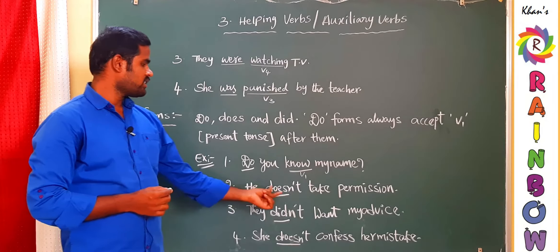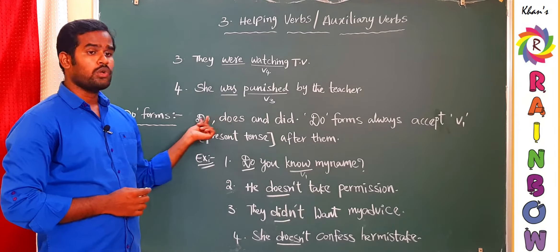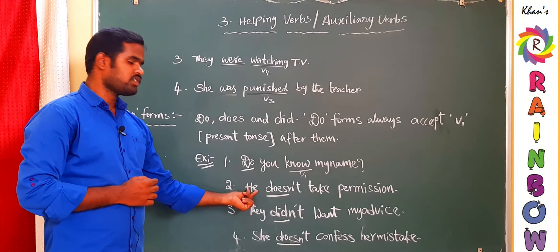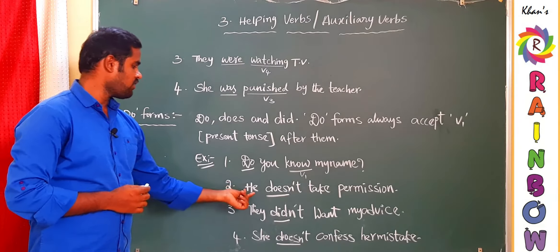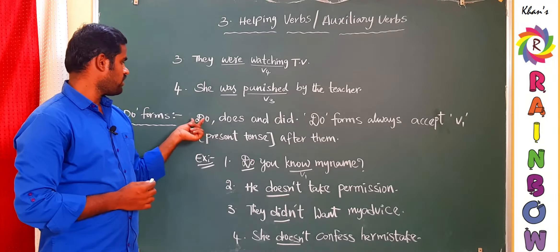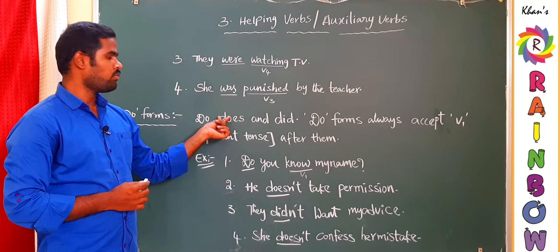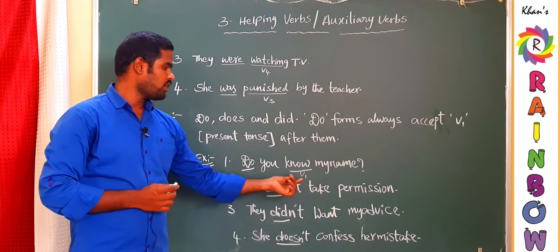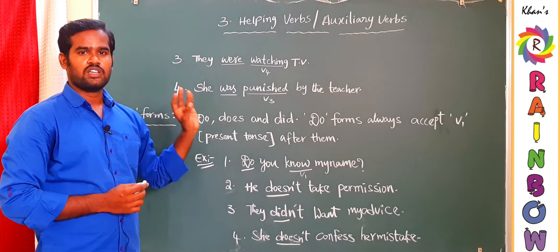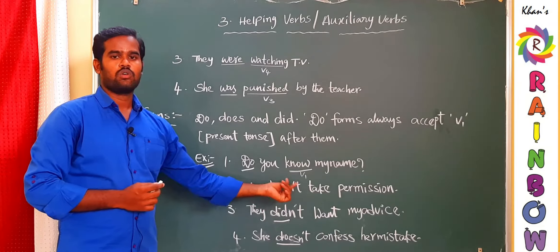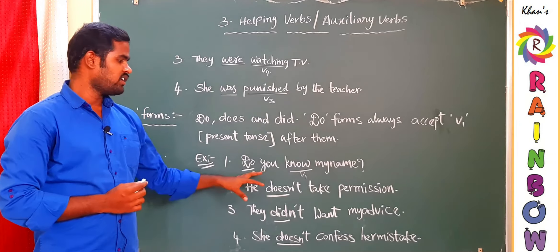The second example: 'He doesn't take permission.' Here 'does' is used because the subject 'he' is third person singular. As discussed in the previous topic, whenever the subject is third person singular and the tense is present, we must use 'does.' Writing 'He don't take permission' is totally wrong. The Do-form here is 'does,' and 'take' is V1, so the rule is fulfilled.